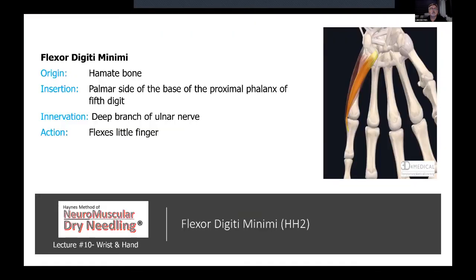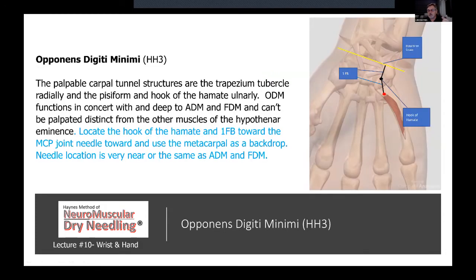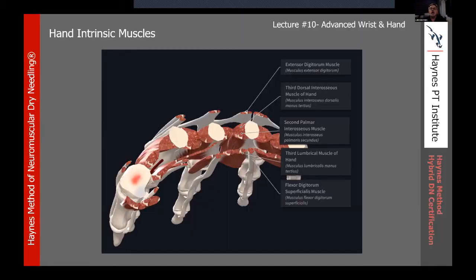The slides are posted on the student portal for you to look at at your leisure. An update to the app should be available within the next couple of days so all of these will be on the app as well. Let's come on to the intrinsic muscles of the hand — the interossei and the lumbricals. I've put in a cross-section to give us a view of the different layers involved in the movement of the fingers of the hand.